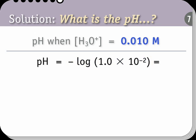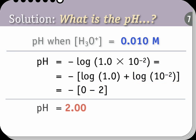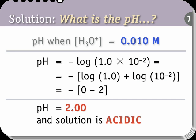When you take a logarithm of two numbers multiplied together, it's the same as the sum of the logarithms of the numbers. So the second step is the logarithm of 1 plus the logarithm of 10 to the minus 2. The log of 1 is 0. The log of 10 to the minus 2 is minus 2. So the pH equals 2.00. The solution is indeed acidic.